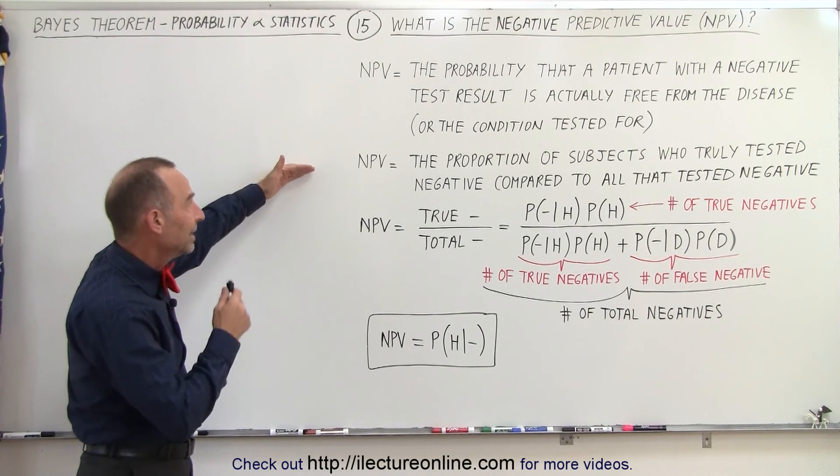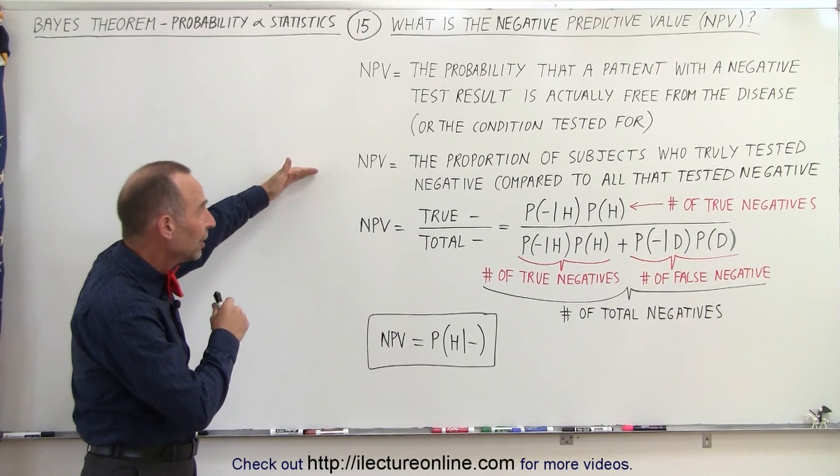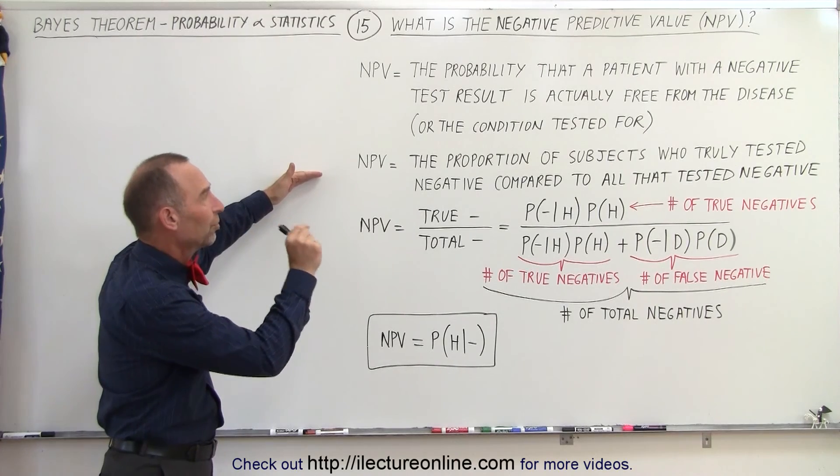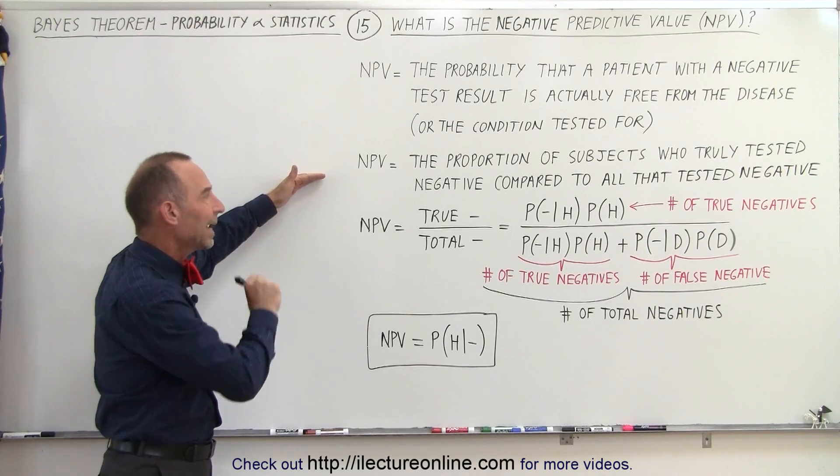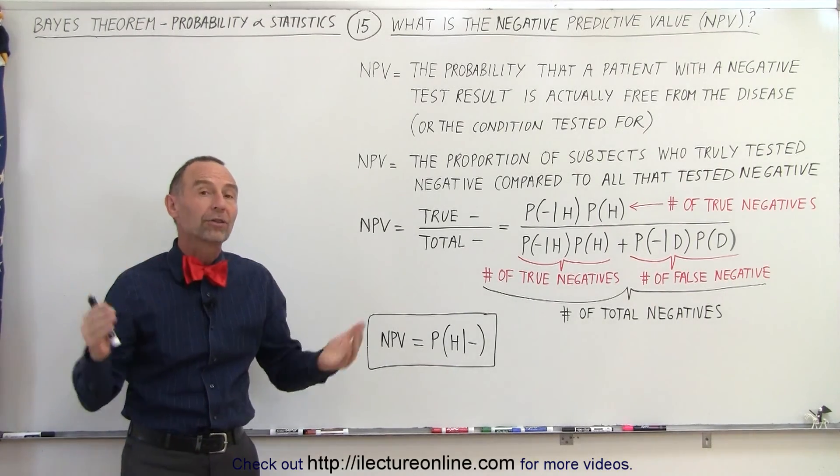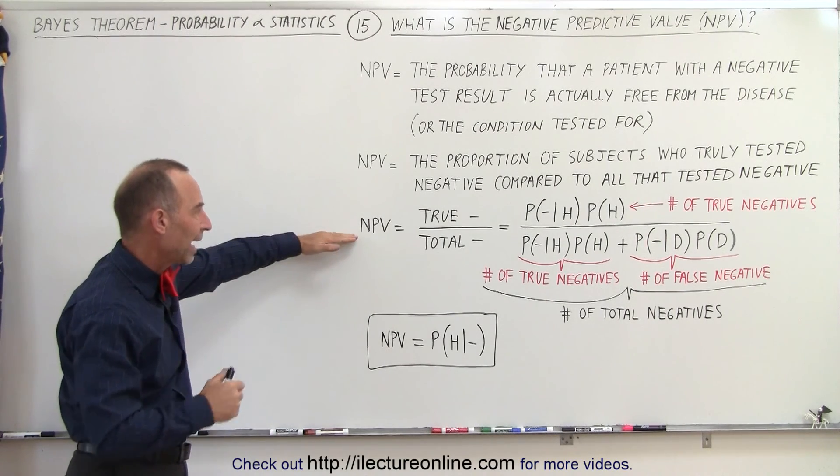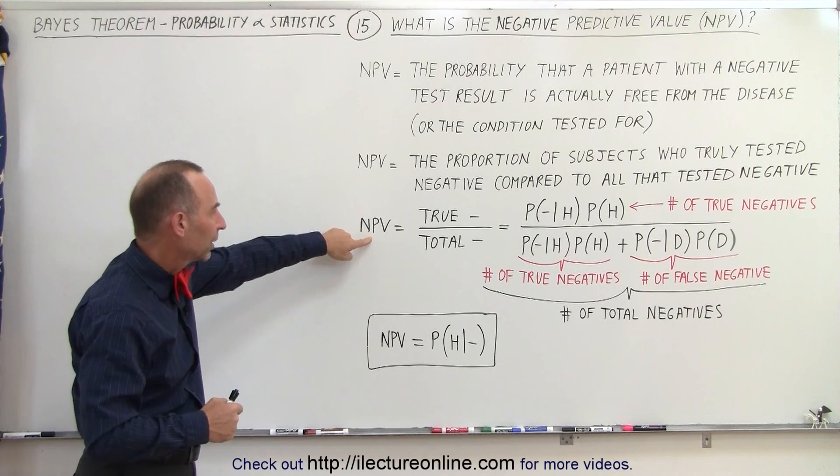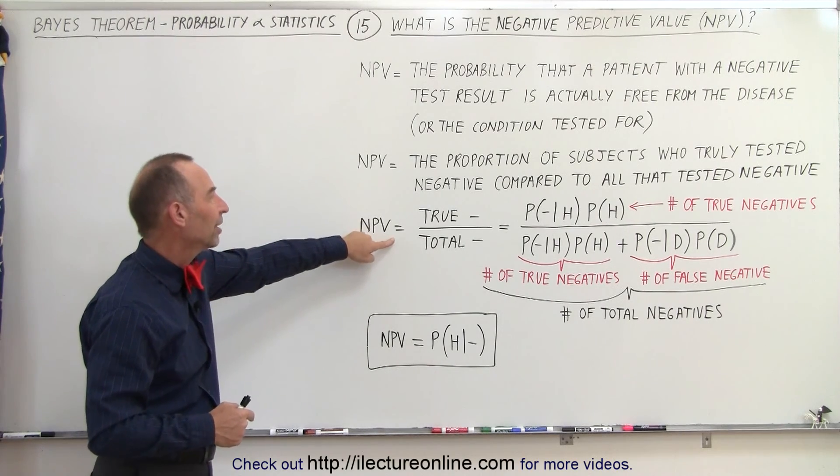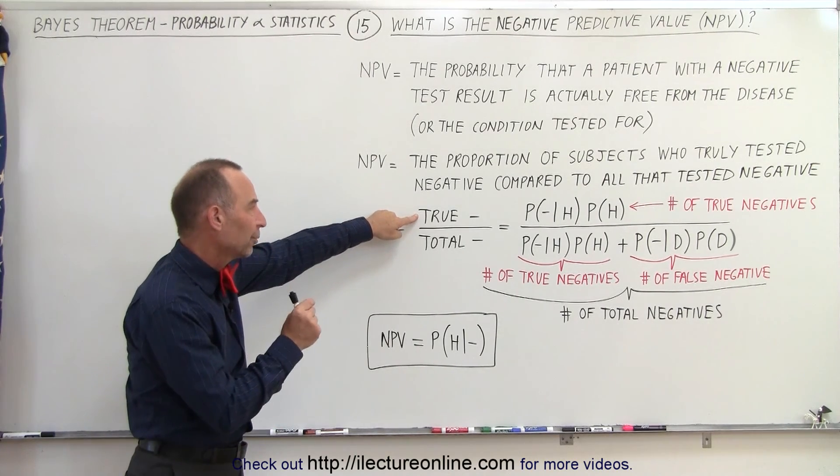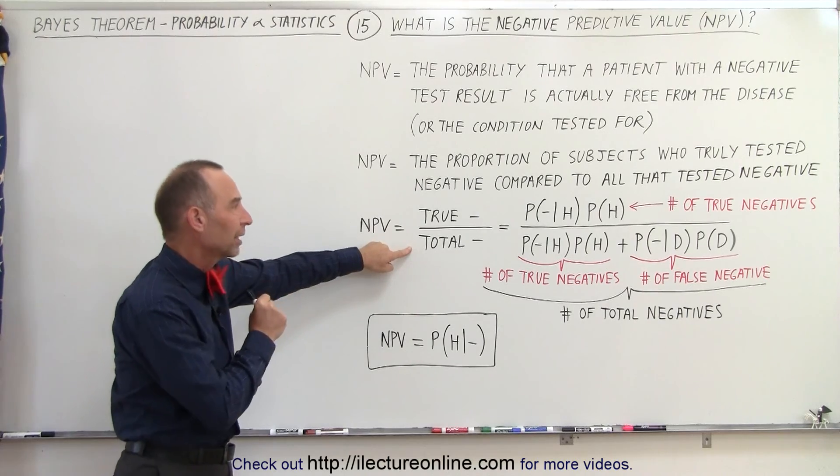Another way to say it is that the negative predictive value is equal to the proportion of the subjects who truly tested negative compared to all the test subjects that tested negative. So here we have it in short. The negative predictive value is equal to the true negative results divided by the total negative results.